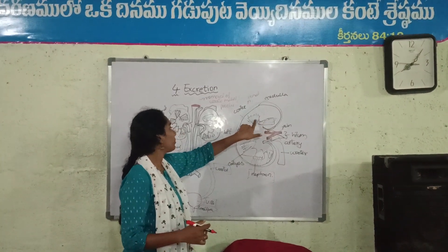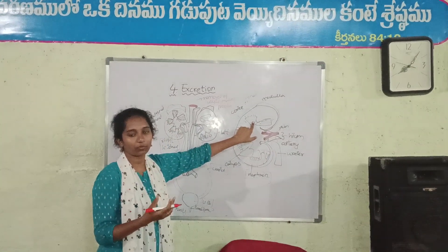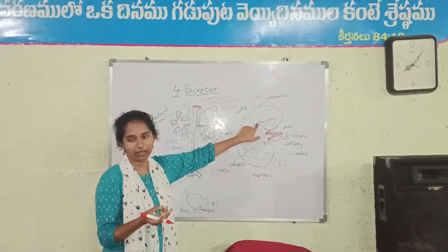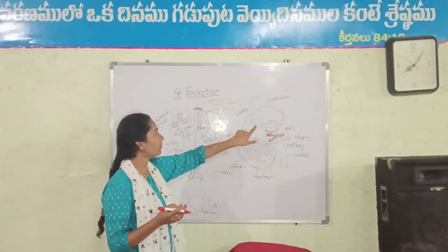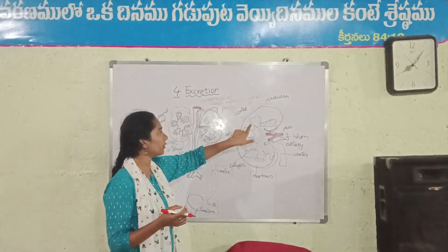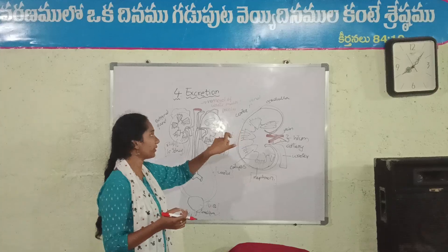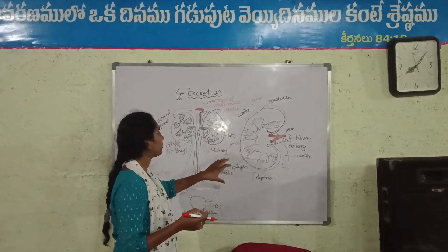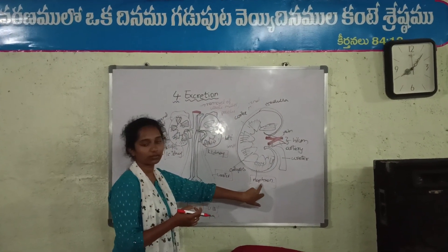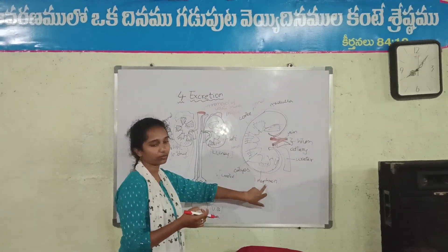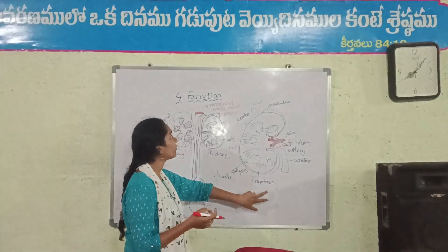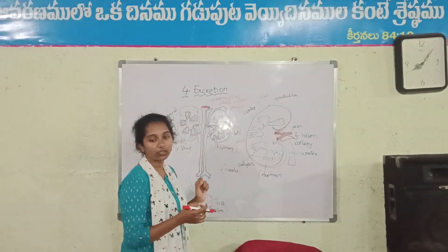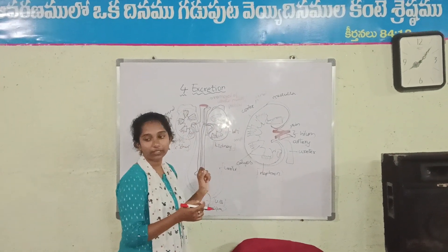The nephrons will work. If the kidney will fail, the major part involving filtering is the nephrons. So the nephron is the structural and functional unit of the kidney.